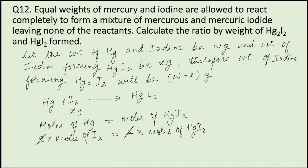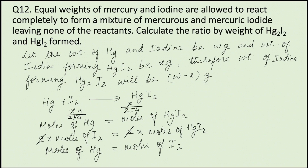And moles of Hg is equal to moles of HgI₂. Therefore we can also write that moles of Hg is equal to moles of iodine. Therefore moles of iodine will be x divided by 254 (molecular weight of iodine), and moles of HgI₂ can be written as x divided by 254 moles.